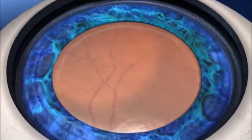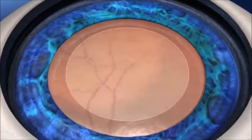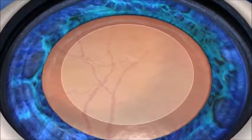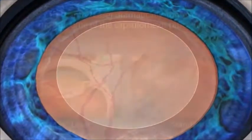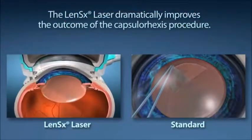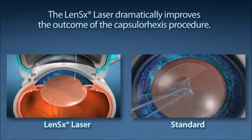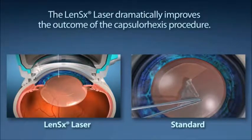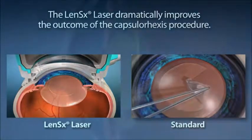Capsular access is the medical term used to describe the removal of the outer layer of the lens in order to allow the surgeon access to removing the cataract. This is the single most important step in your visual outcome. In standard cataract surgery, this step is performed by the surgeon manually creating a circular opening with a handheld instrument. LensX laser offers your surgeon laser precision to create the circular opening.